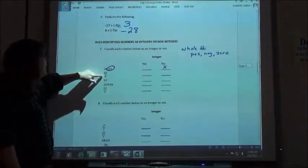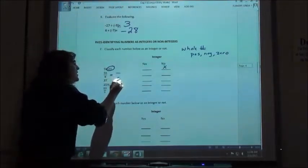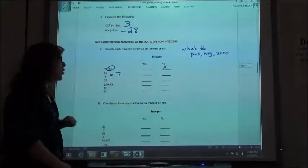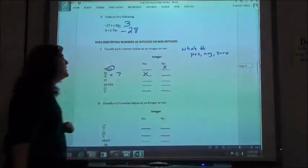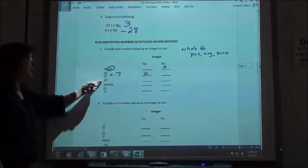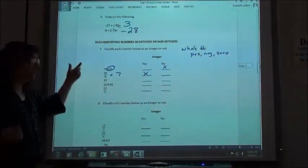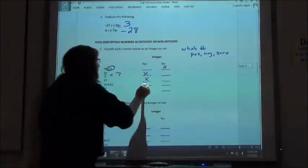56 eighths. Well, if I divide 8 into 56, it's 7. 7 is a nice whole number, so yes, it is an integer. 37, hopefully, you just look at that and say, yep, that's a whole number. Yes, that's an integer.